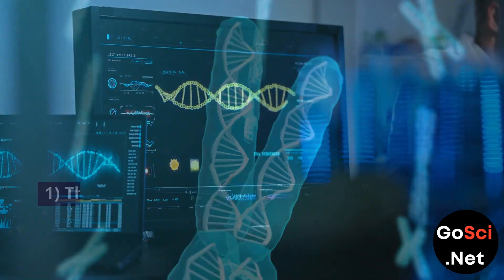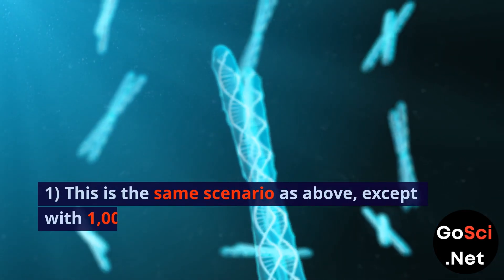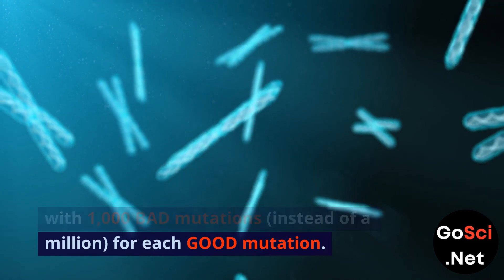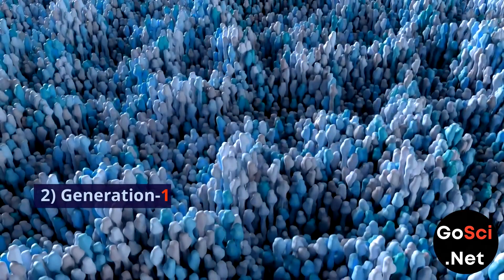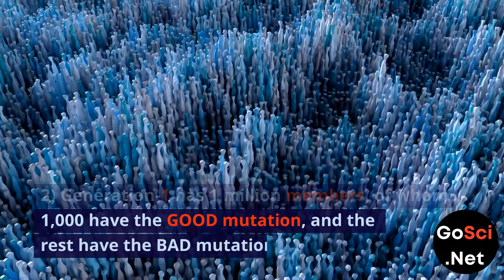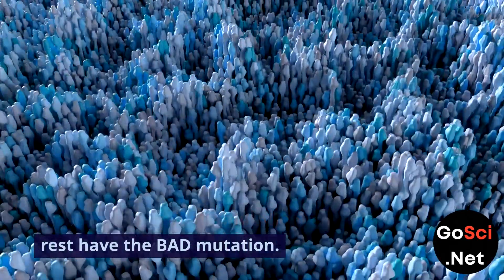Scenario 1000. This is the same scenario as above, except with 1,000 bad mutations, instead of a million, for each good mutation. Generation 1 has 1 million members, of whom 1,000 have the good mutation, and the rest have the bad mutation.